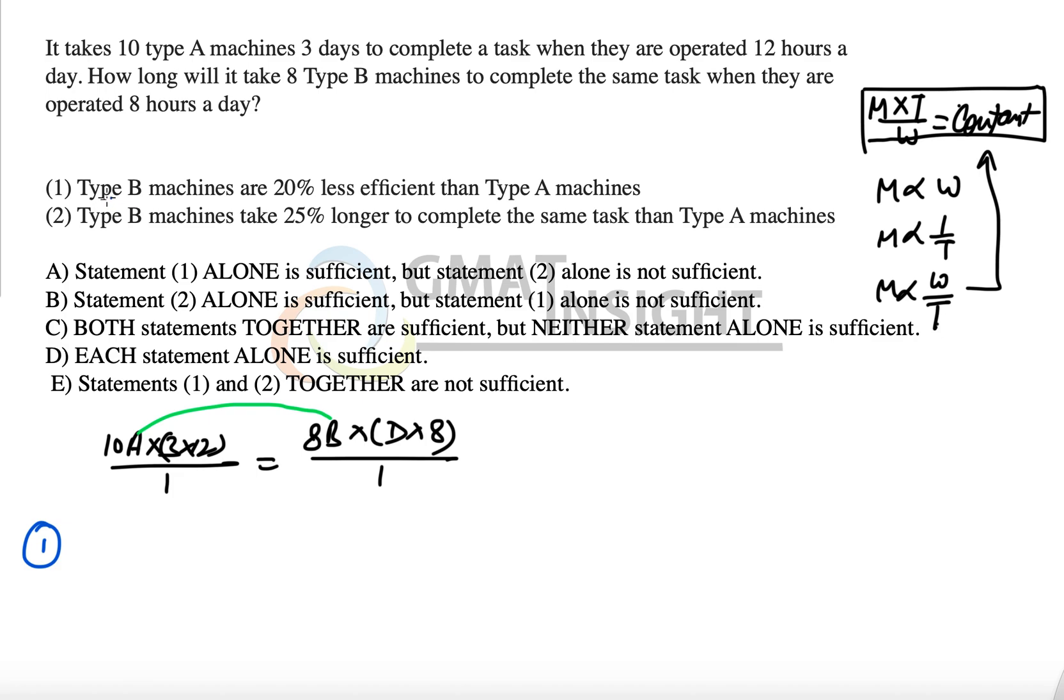Now let's look at the first statement which says Type B machines are 20 percent less efficient than Type A machines. That means B is equal to 0.8 times of A, that means B machine is 20 percent less, that means it's equivalent to 80 percent of machine A efficiency.